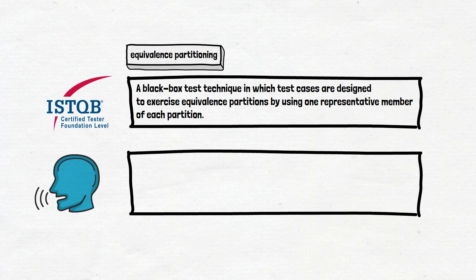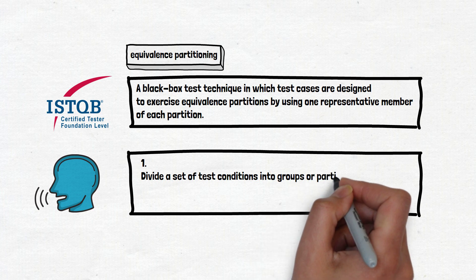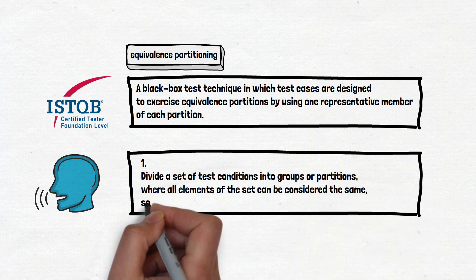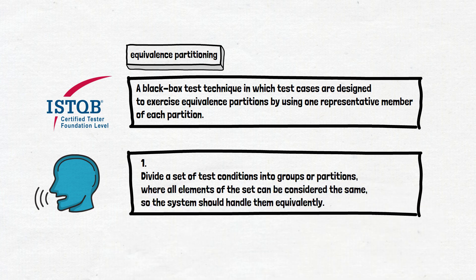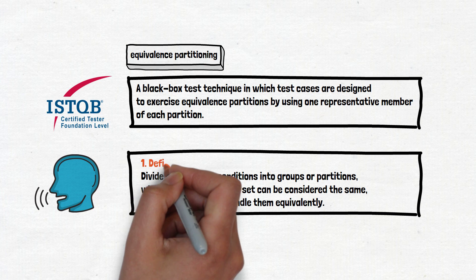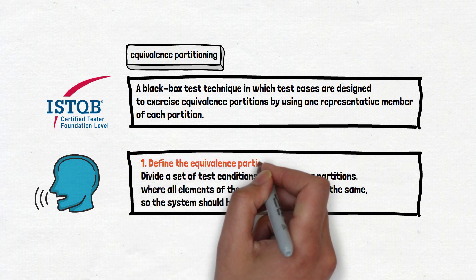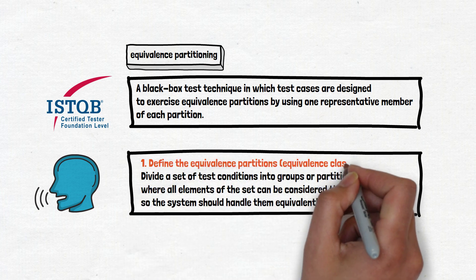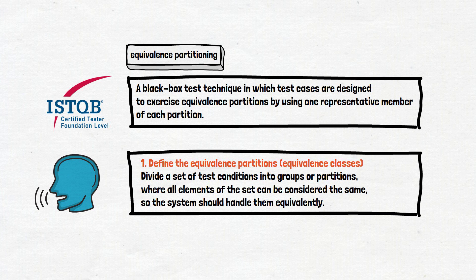The first one sounds like this. Divide a set of test conditions into groups or partitions where all elements of the set can be considered the same. So the system should handle them equivalently. To translate into human language, it means define the equivalence partitions or equivalence classes that are synonyms. We know it still tells nothing to you. So let's check on our example.